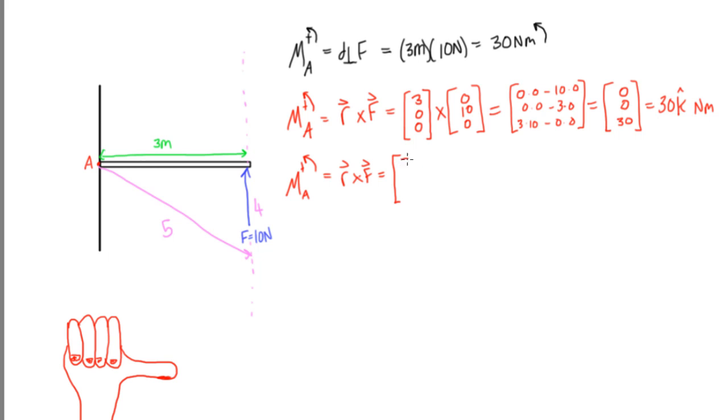We're going to have [3, -4, 0] cross [0, 10, 0]. You're looking at this, and this looks different, we'll probably get a different answer, but let's see what happens. First element: -4 times 0 minus 10 times 0. Last element is 3 times 10 minus 0 times -4. And the middle element is 0 times 0 minus 0 times 0 minus 3 times 0. And so we will get [0, 0, 30].